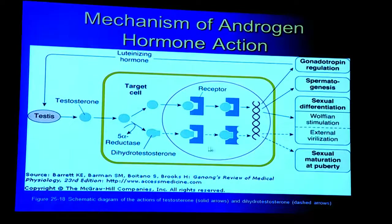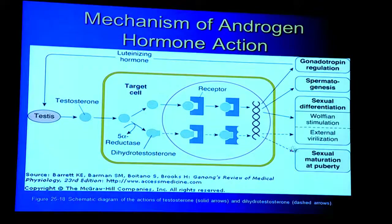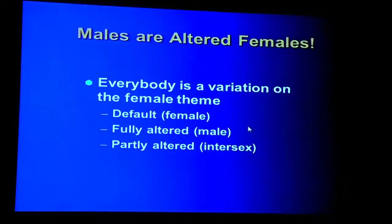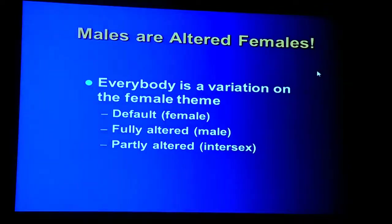For testosterone to work, it must get into the target cell and bind to a receptor — think of the hormone as a three-dimensional key and the receptor as a lock. When it fits, an active transcription factor binds to the DNA and causes certain genes to be expressed. Dihydrotestosterone works the same way, and this is how we get maleness. So, males are altered females — everybody is a variation on the female theme. Because hormones have dose-dependent effects, some people are partly altered, giving us a type of intersex.